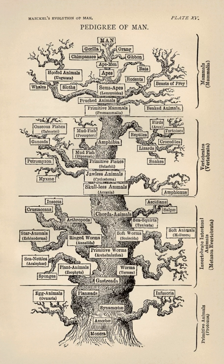In biology and ecology, a resource is a substance or object in the environment required by an organism for normal growth, maintenance, and reproduction. Resources can be consumed by one organism and, as a result, become unavailable to another organism.